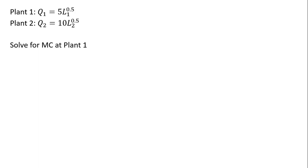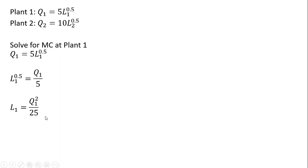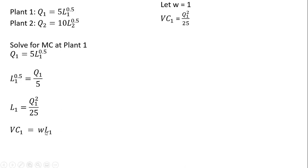So, once again, the production function is given at each plant. To figure this out, we're going to first solve for the marginal cost at plant one. I'm going to take the production function for plant one and solve it for L, units of labor — dividing through by five, then squaring both sides to get rid of the exponent on L. After squaring both sides, we've got an expression for L. The variable cost at plant one is just the wage times units of labor. We let W equal one, and L subscript one is now Q squared divided by 25. That's the variable cost of production at plant one. To get marginal cost, we take the derivative of the variable cost equation with respect to output.